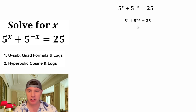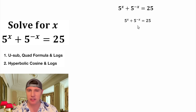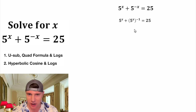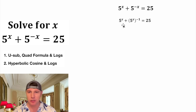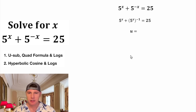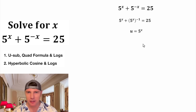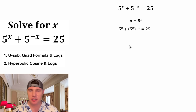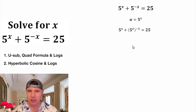First thing I want to do is rewrite this 5 to the negative x as the quantity 5 to the x to the negative 1 power. Now we have two of these 5 to the power of x's. We can make this a little bit easier to work with with some u substitution. Let's let u equal 5 to the power of x, and now in the place of each of these 5 to the power of x's, we can plug in u.